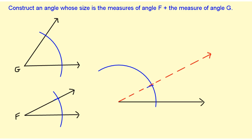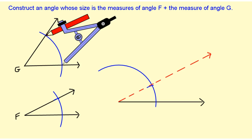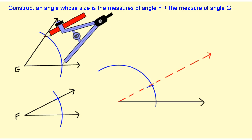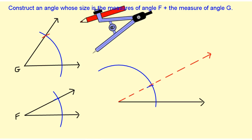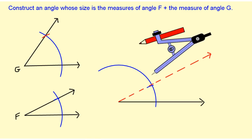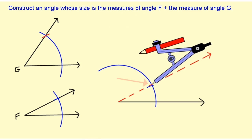But because I'm looking for an angle that has the measure of F plus G, what I'm going to do is measure the opening of angle G and put that onto the dotted red line. I've got the compass opened to the right measurement.